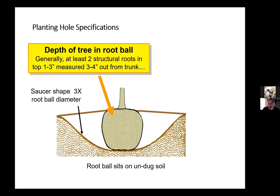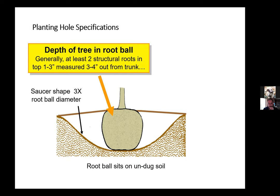We want the root flare of the tree — where the shoot system flares out and becomes roots — to be about an inch or two above grade. You'll find the big roots somewhere in the top couple inches of the root ball. You may have to remove soil from the top of the root ball to expose the flare, as it's very common for the flare to get buried by nursery practices. If you get the flare one or two inches above grade, you're going to be better off.